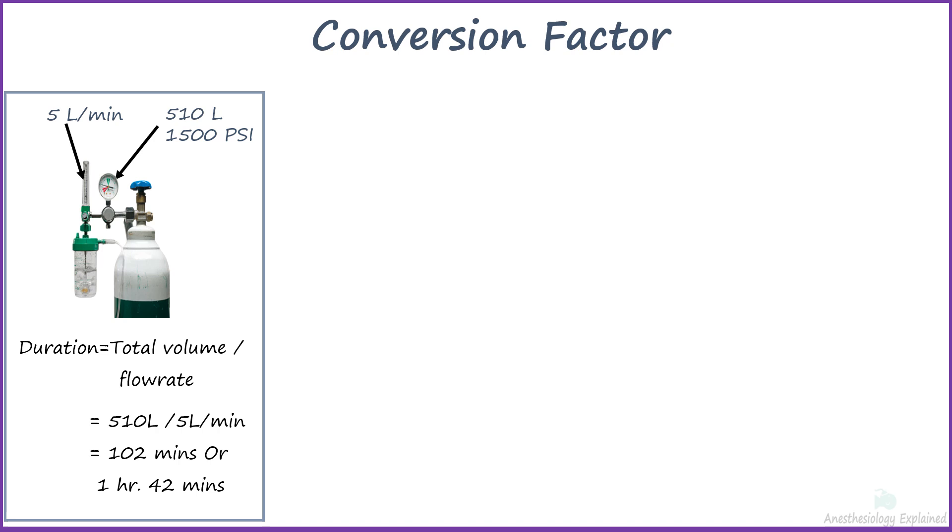There is however a better way to calculate the time a cylinder will last at certain flow rate. For this, we use conversion factor which is the maximum volume divided by maximum pressure of a cylinder. The formula to calculate the time a cylinder will last is by multiplying conversion factor and current cylinder pressure divided by flow rate.